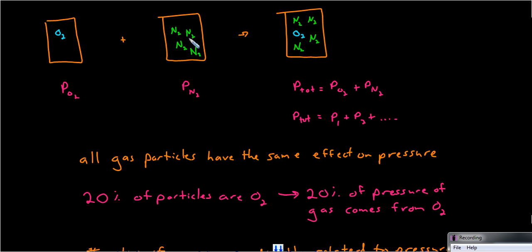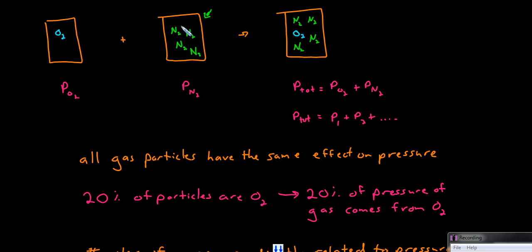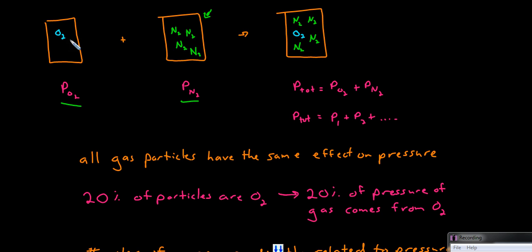Say you have a container of nitrogen. There's another container of oxygen which is the same volume and at the same temperature. The nitrogen within this container has a certain pressure — we call this the partial pressure of nitrogen. There's also the pressure of oxygen in the other container — we call this the partial pressure of oxygen.